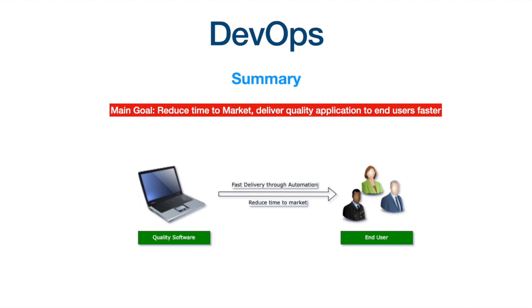The main goal of DevOps is to reduce time to market and deliver quality software to end users faster. It has been proven that with DevOps, new features, changes, and fixes can be delivered to end users several times a day. Please subscribe to our channel so you can be notified about new videos on learning software development.